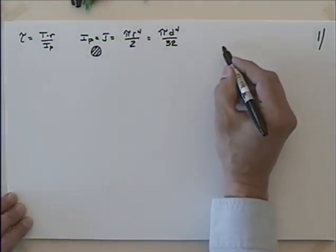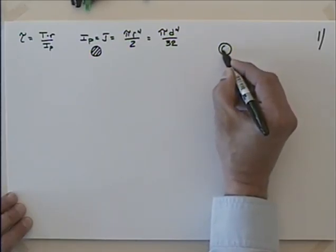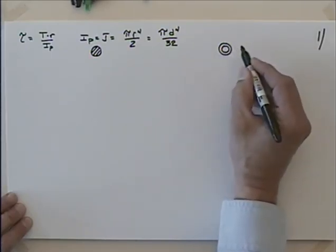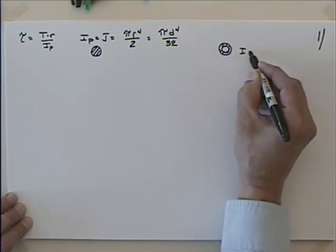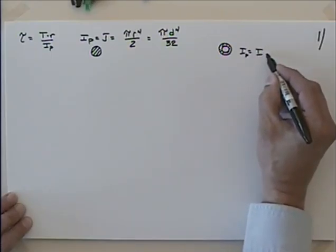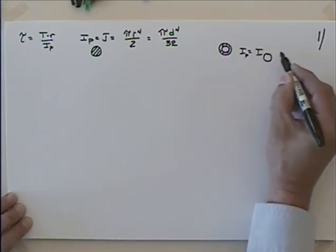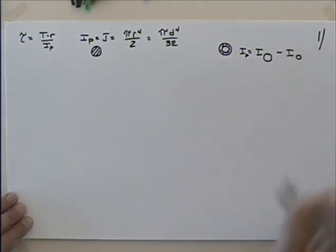Now if you're looking for a hollow section, the polar moment of inertia I is going to be equal to I for the outside minus I for the inside. So you take the polar moment of inertia of the larger outside and subtract the polar moment of inertia for the smaller inside.